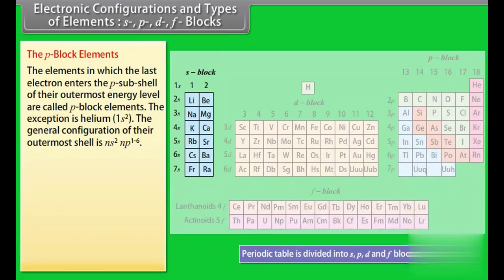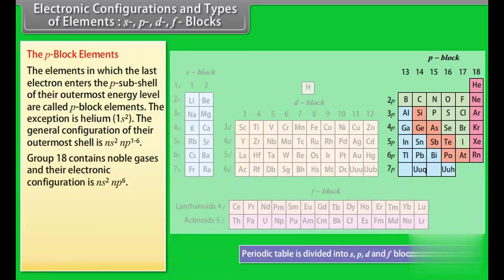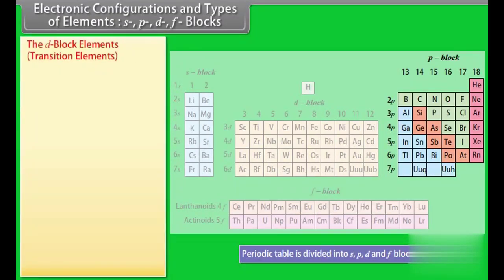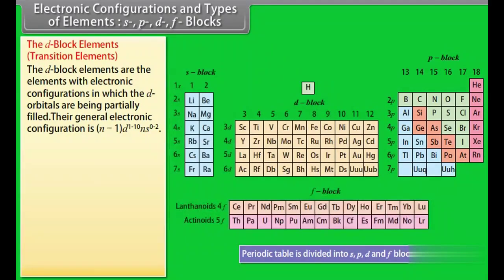The P block elements: The elements in which the last electron enters the P subshell of their outermost energy level are called P block elements (exception: helium). Group 18 contains noble gases. The elements of group 17 are called halogens, and the elements of group 16 are called chalcogens. They readily gain an electron to attain a stable configuration.